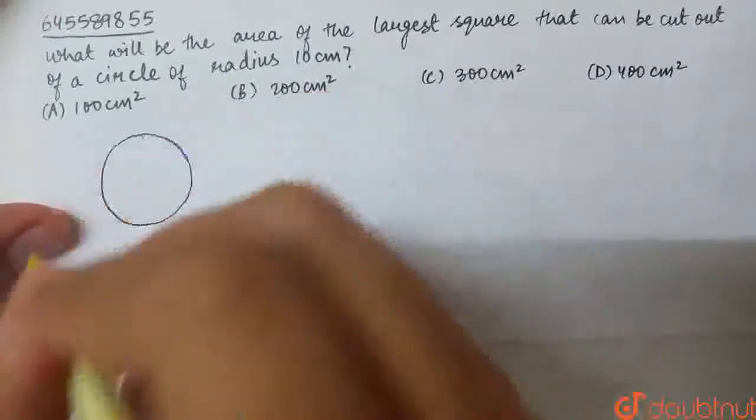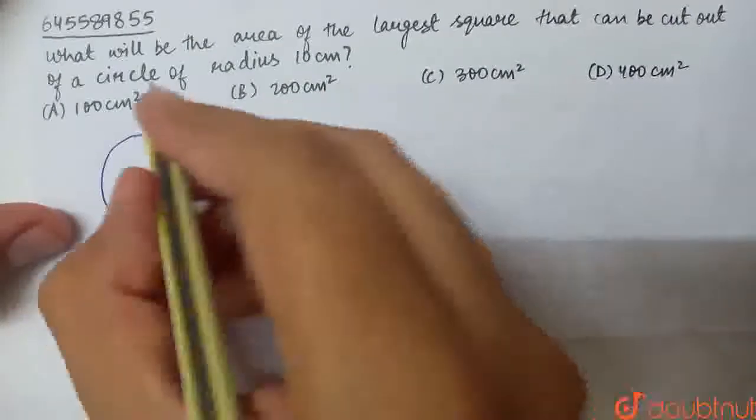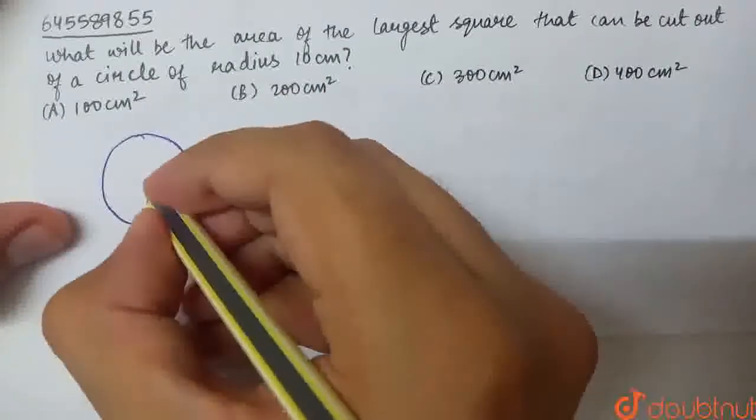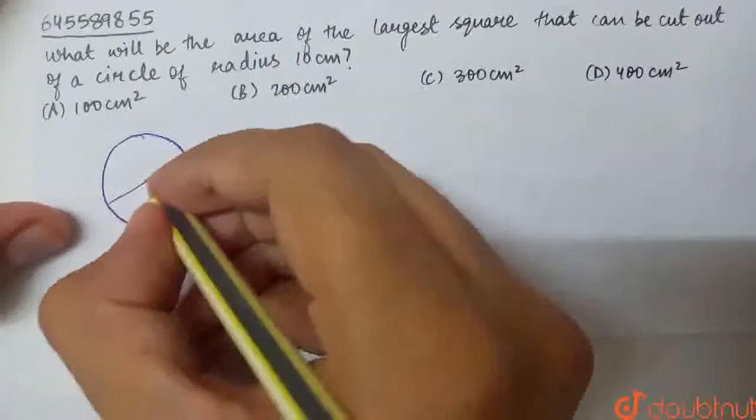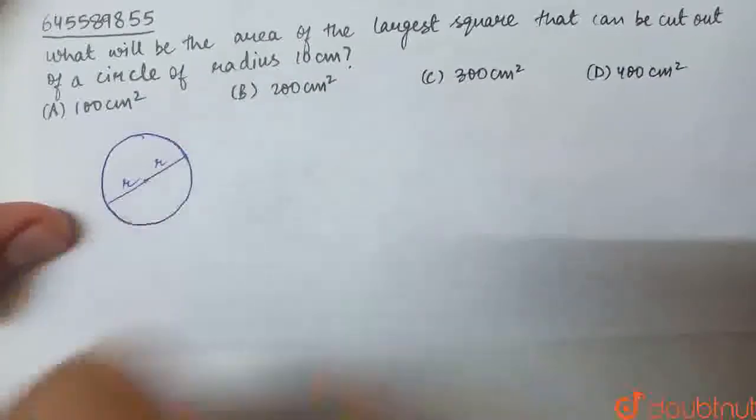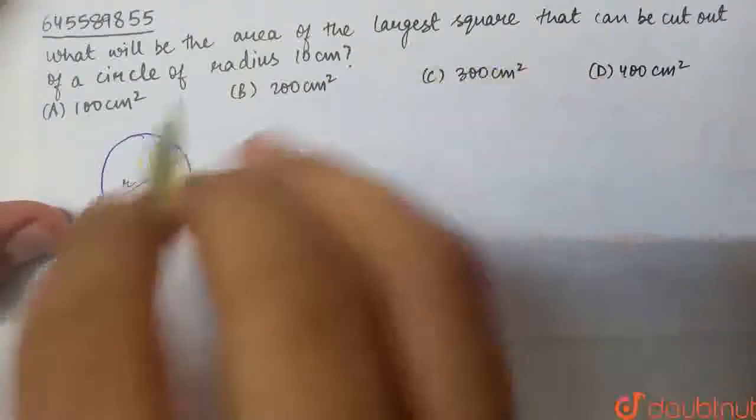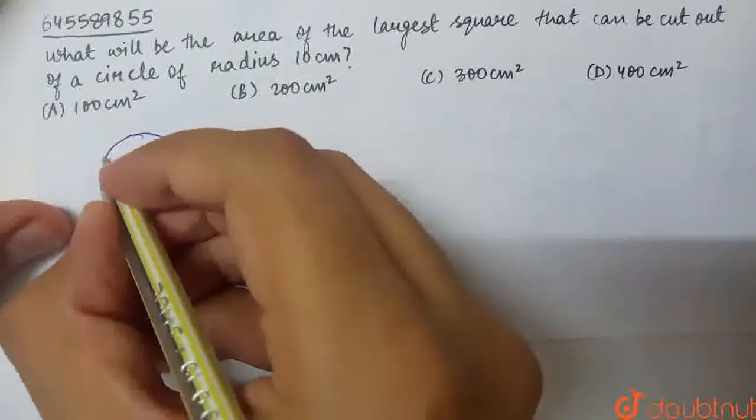This is a circle of radius. This is our center. Here we have a radius of 10 cm given here. Let's suppose this is our radius. This is the area of the largest square that can be cut out of a circle. How will the largest square be?